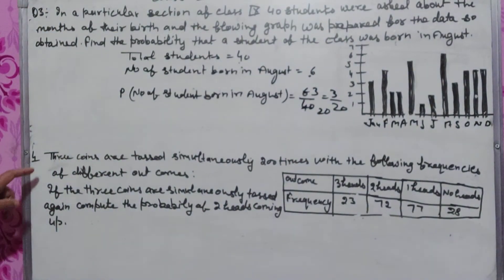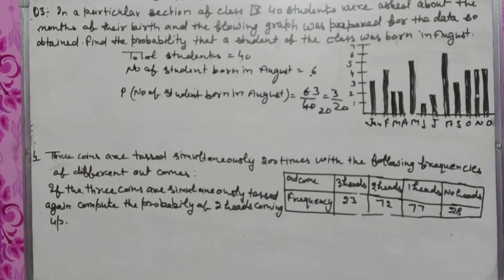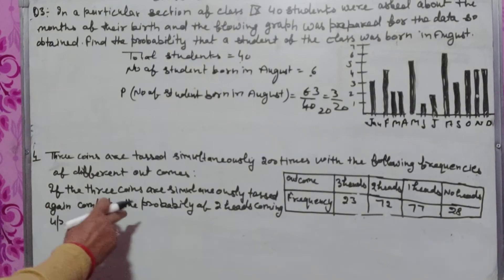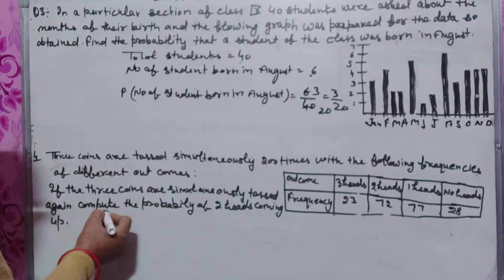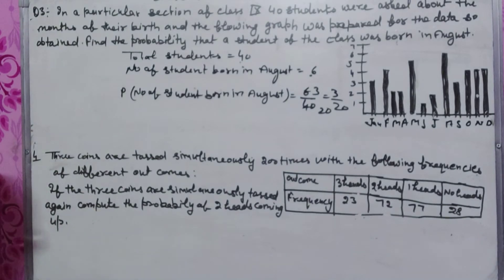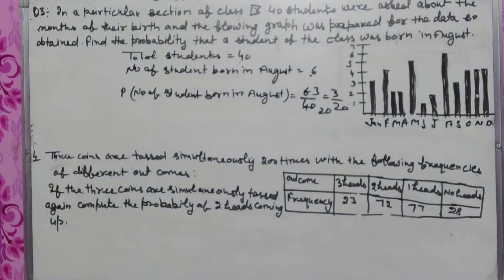4th question hamar paas. 3 coins are tossed simultaneously 200 times with the following frequencies of different outcomes. If the 3 coins are tossed again, compute the probability of 2 heads coming up.